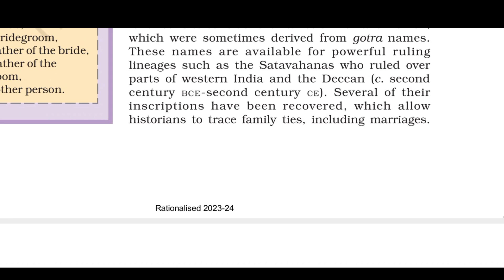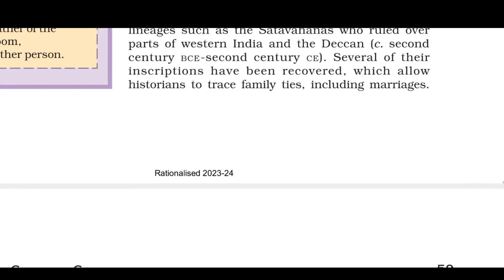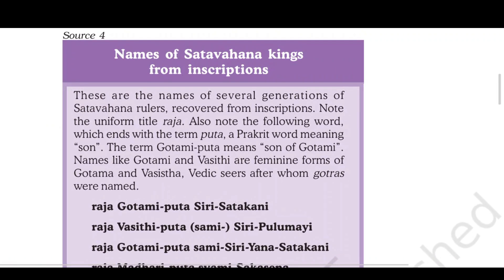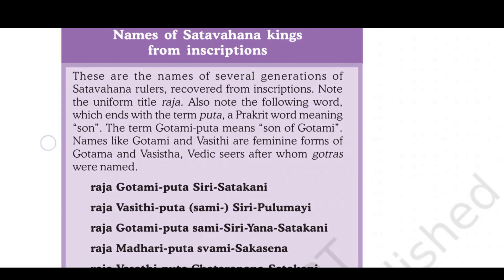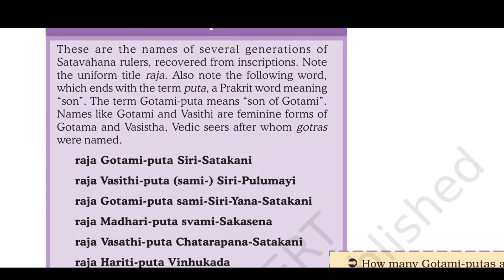These inscriptions allow historians to trace family ties including marriages. Names of Satavahana kings from inscriptions — these are the names of several generations of Satavahana rulers recovered from inscriptions. Note the uniform title 'Raja', and also note words ending with the term 'puta'.